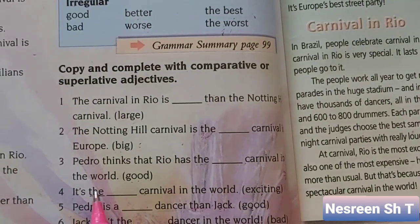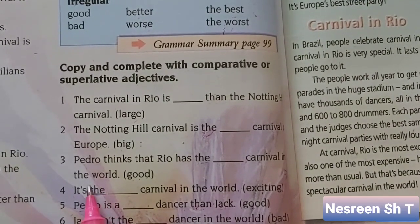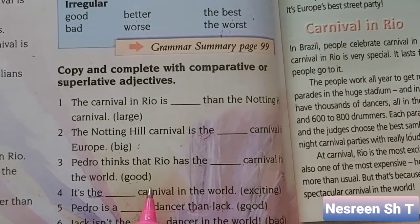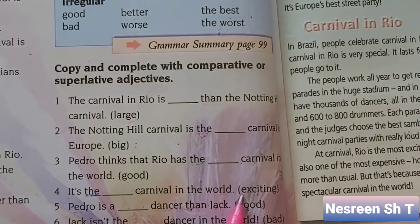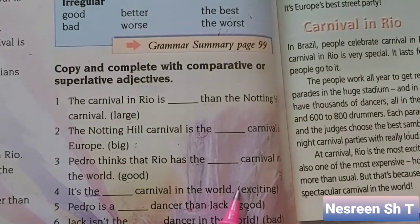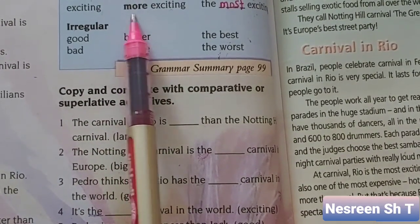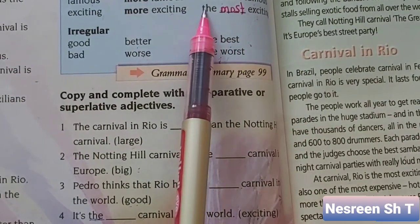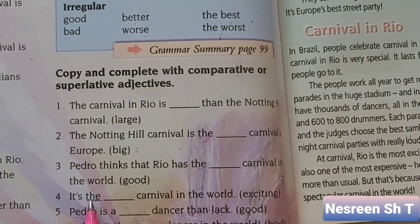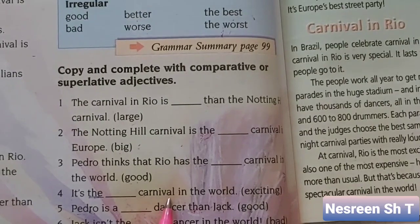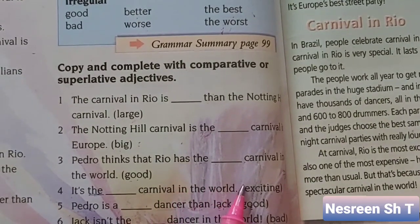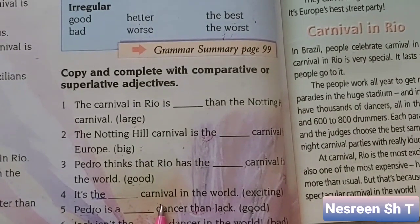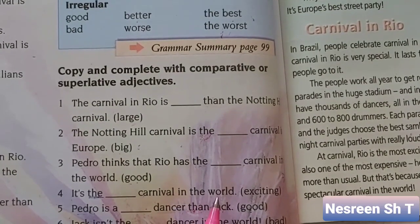Number four: It is the ___ carnival in the world. The adjective given is exciting. Exciting is a long adjective, so its superlative form is the most exciting. It is the most exciting carnival in the world. This is a superlative because we are comparing one thing to others in the same group.